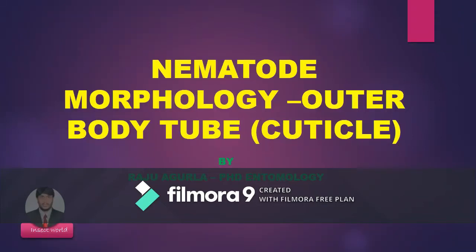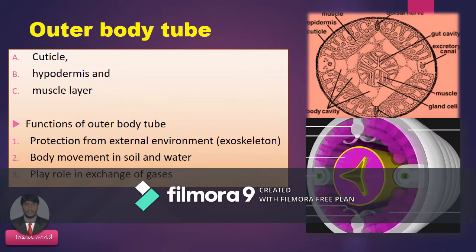Today I am going to discuss nematode morphology. The nematode body is divided into three parts: the outer body tube also known as cuticle, the inner body tube also known as the digestive system, and the body cavity also known as pseudocoelom. The outer body wall is further divided into three parts: cuticle, epidermis, and muscle layer.